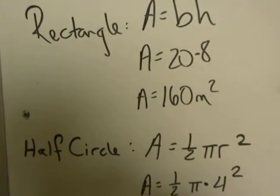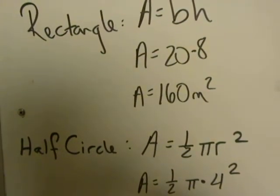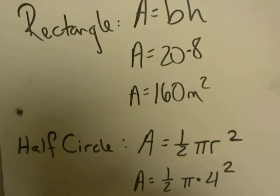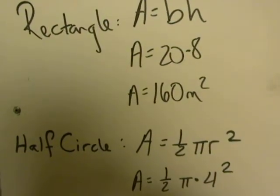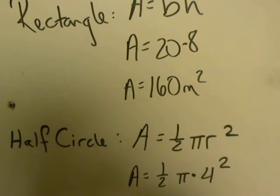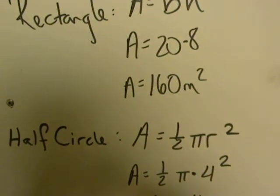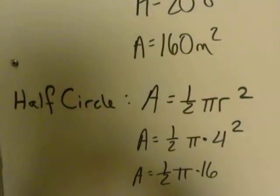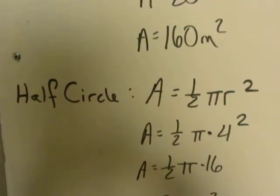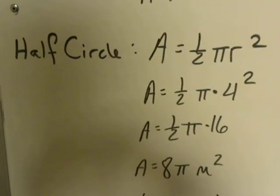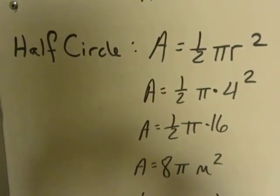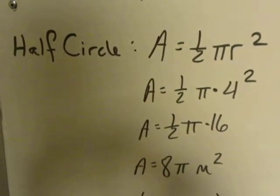For half of a circle I'm going to take the area formula which is π r² and take half of it. So it's ½ π r². Again I figured out that my radius is really four. Four squared is sixteen. Half of sixteen is eight. So the area of that half of a circle is 8π meters squared in simplest pi form.